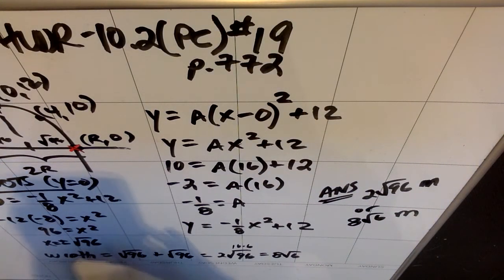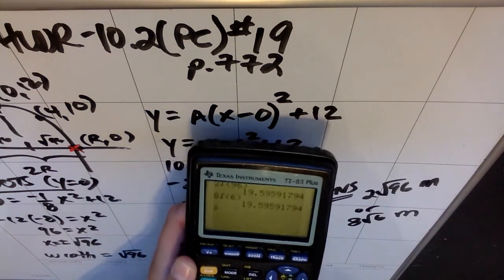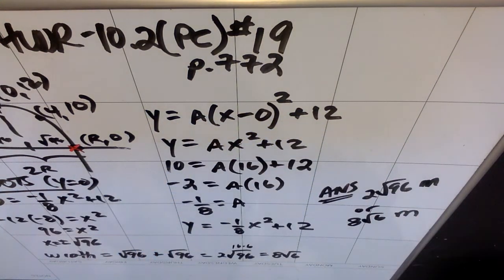So 2√96, and I'm just going to double check that my math is right and make sure that 8√6 is the same answer. Yep, either way, we get 19.595 or 596 meters apart.